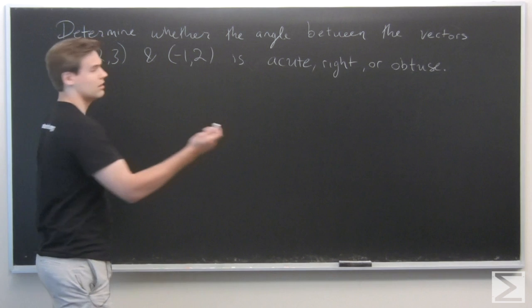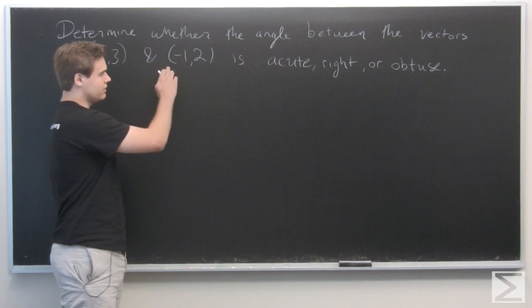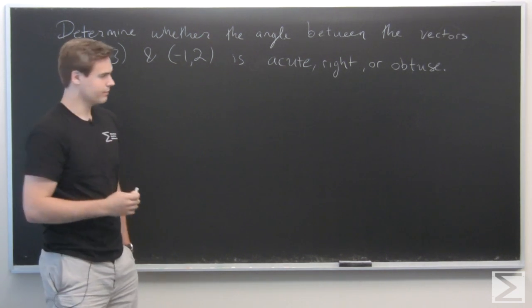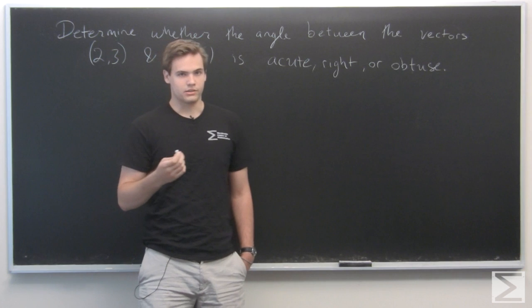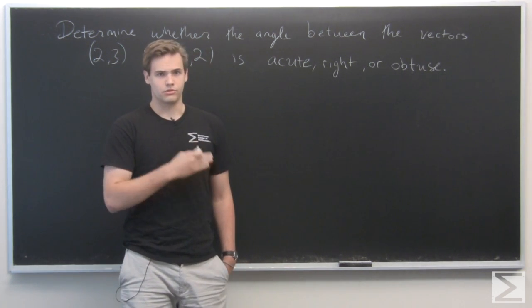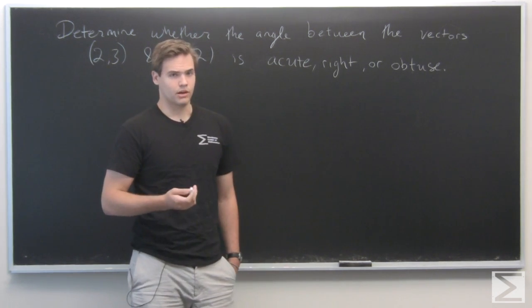So right now, the vectors we want to do in question are (2, 3) and (-1, 2). So recall that this means whether or not the angle is obtuse, acute, or right corresponds to the sign of the dot product.